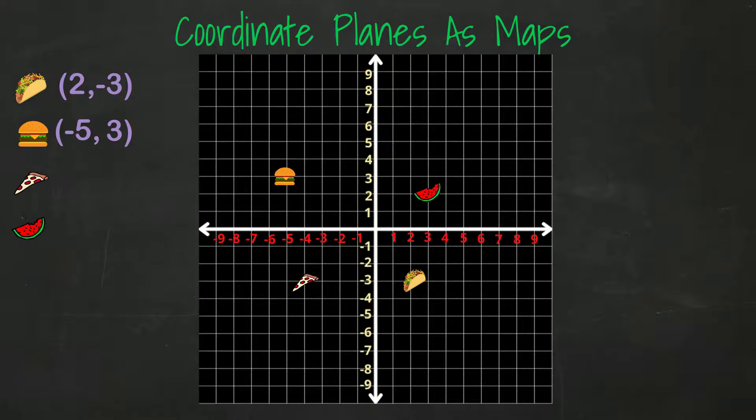What are the coordinates for the piece of pizza? It is in quadrant 3, which means that both x and y values are negative. We move to the left of the x-axis four spaces from the origin, and then move down three spaces from there. The coordinates are negative 4 and negative 3.